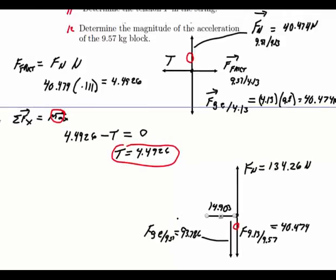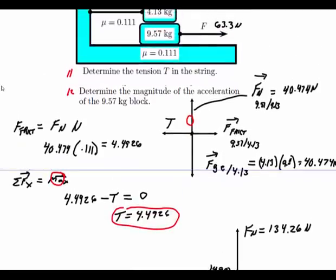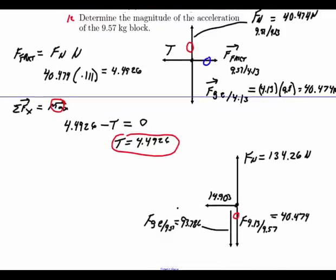Now the only thing you're missing is you have another force pair here. You had this one. Right here. And we said that one was 4.48. Now that's the force that the 9.57 is pushing the 4.13. The 4.13 must push back the opposite direction. So we'll have another vector coming off this direction here. And that value would be 4.4926 newtons.